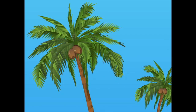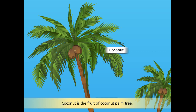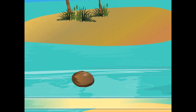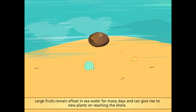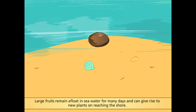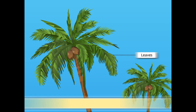Look at these big coconuts! These are the fruits of the coconut tree. This fruit is covered by a hard shell that protects the fruit from damage. Large fruits remain afloat in seawater for many days and can give rise to new plants on reaching the shore. Have a look at the leaves of the coconut tree. The leaves are formed of long strips to face the strong winds.